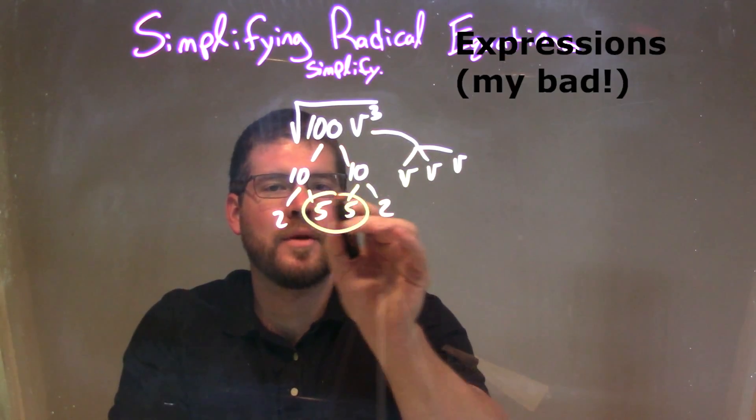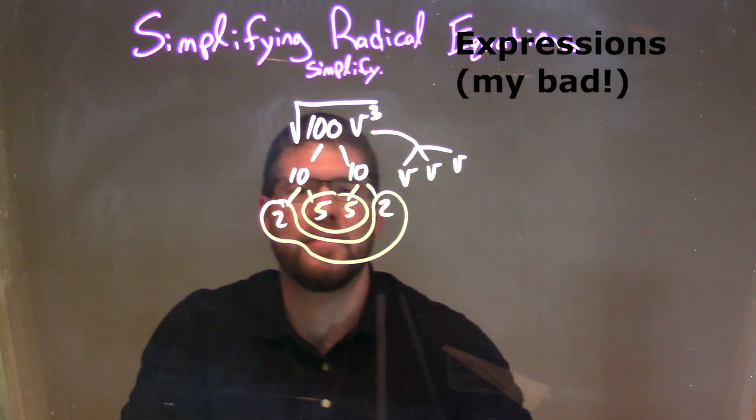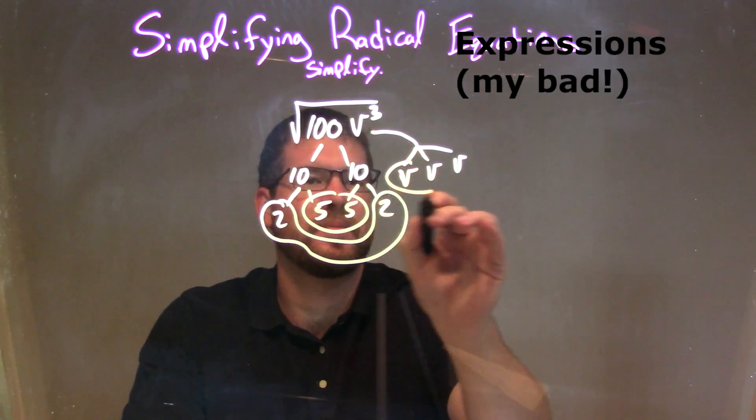Let's circle our pairs. So we have a pair of 5s right here in the middle, and then a pair of 2s. I circle like that, okay? But I have my pair. I have a pair of v's, okay?